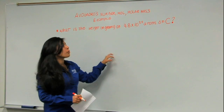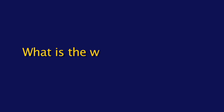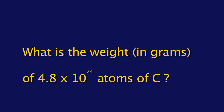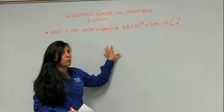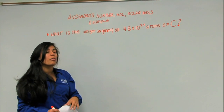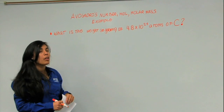So this is our problem: What is the weight in grams of 4.8 times 10 to the 24th atoms of carbon? You might be thinking you don't know how to resolve this, but that's not true. You already have the knowledge required to solve this problem.